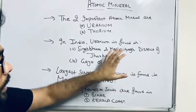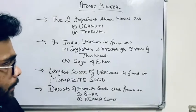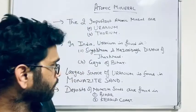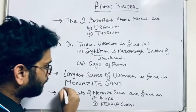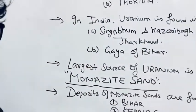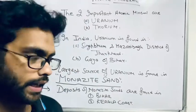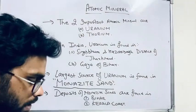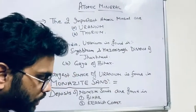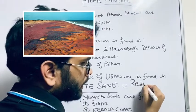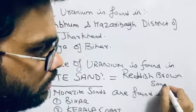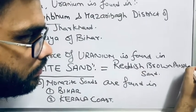That covers the distribution of uranium in India. Now an important question: where is the largest source of uranium found? The answer is monazite sand. What is monazite sand? First of all, it is a reddish-brown phosphate sand — it has a reddish-brown appearance and contains phosphate.